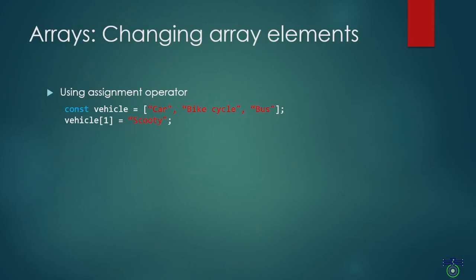The next topic is changing array elements. We can change an array element using the assignment operator. In this example, we have taken vehicle which has car, bicycle, and bus, and we want to change bicycle to scooty. If you put the index value of bicycle and assign scooty, the bicycle will change to scooty. The array will then have car, scooty, and bus.